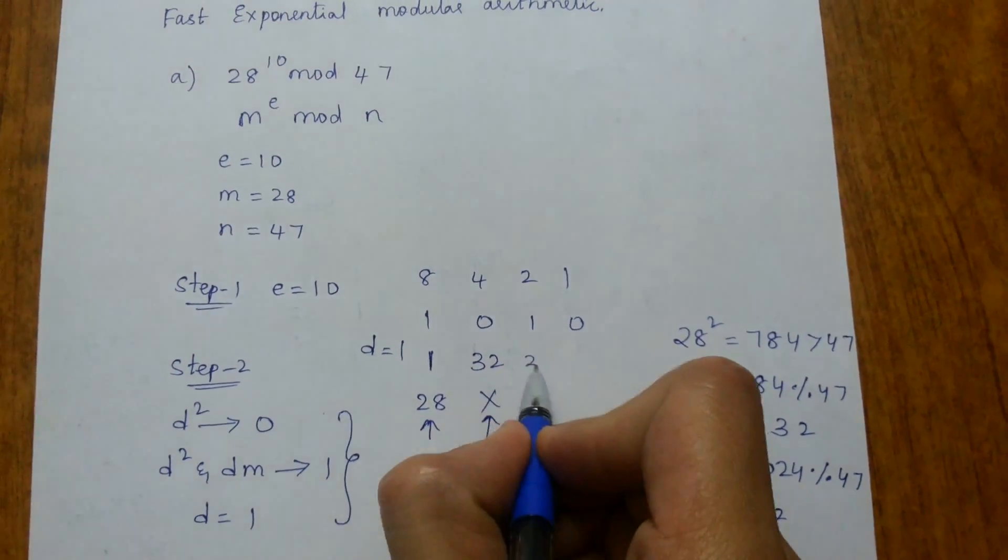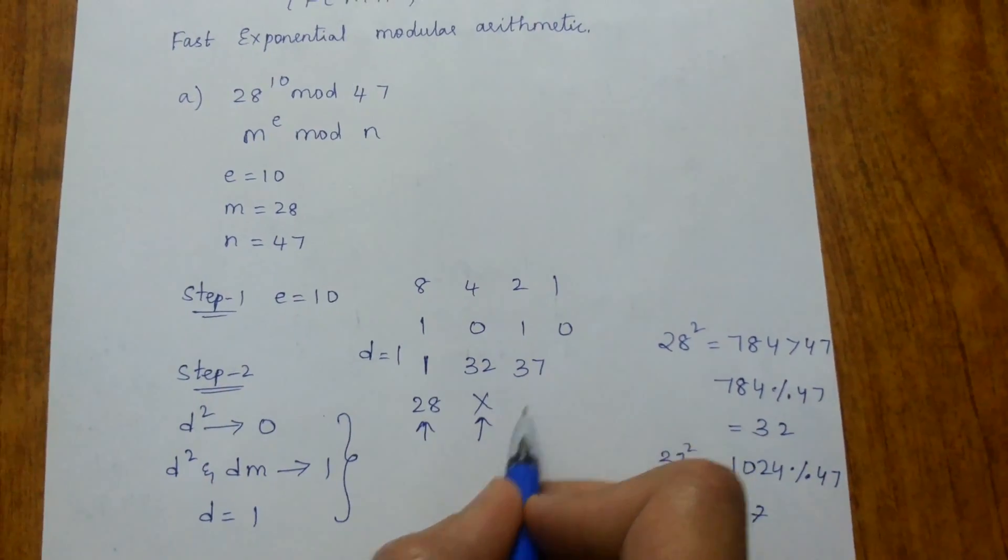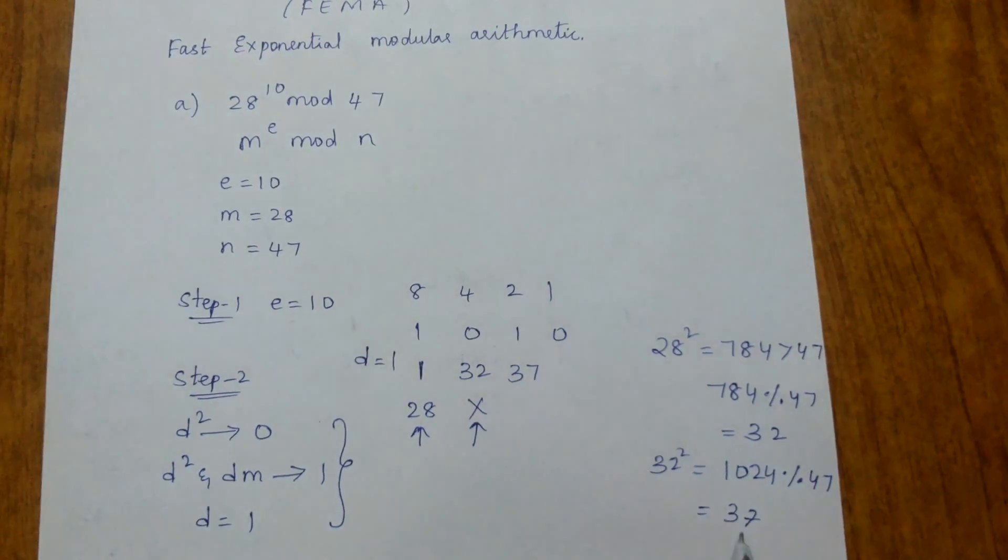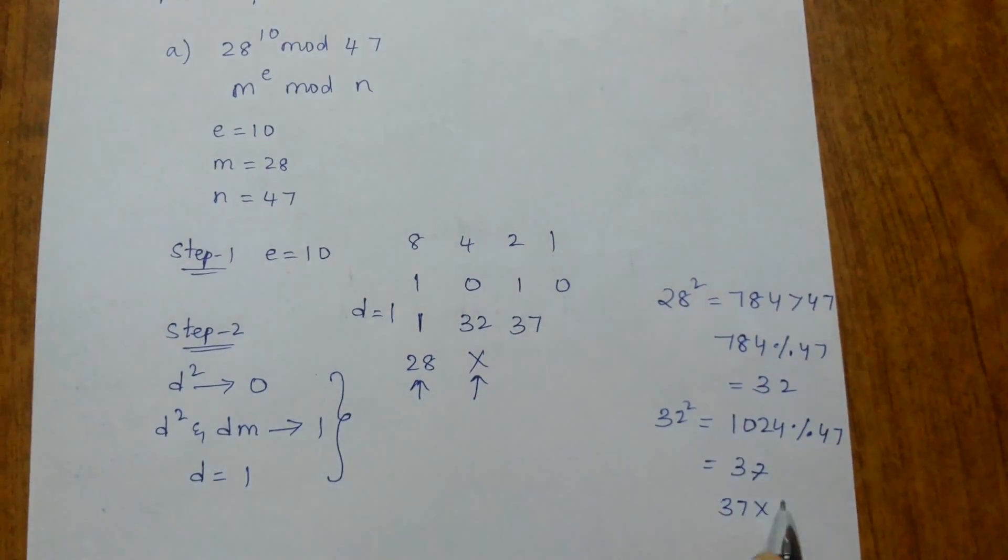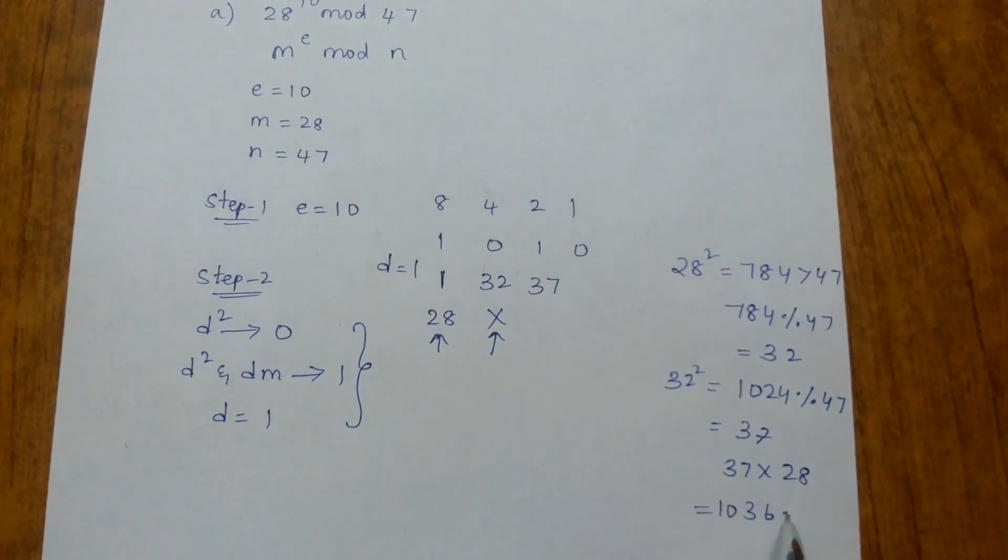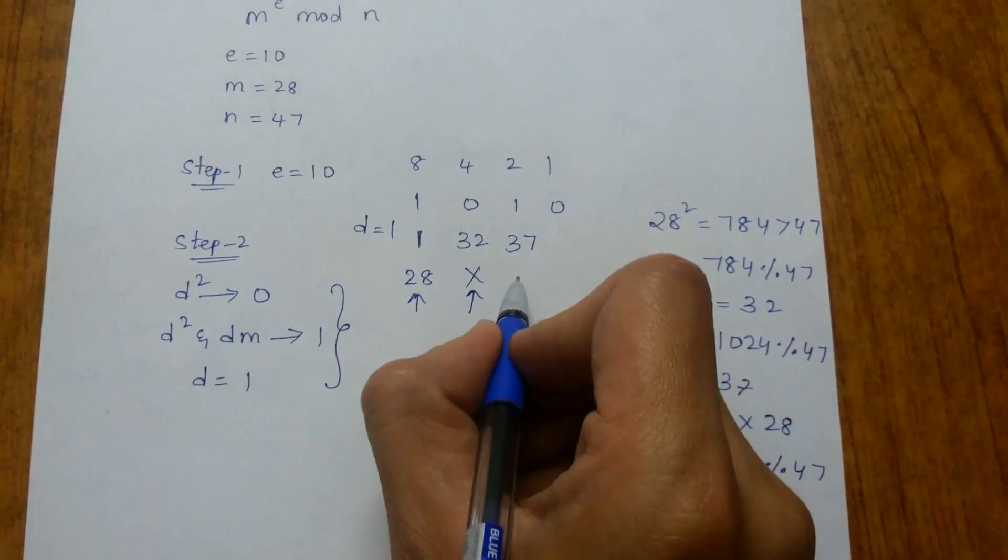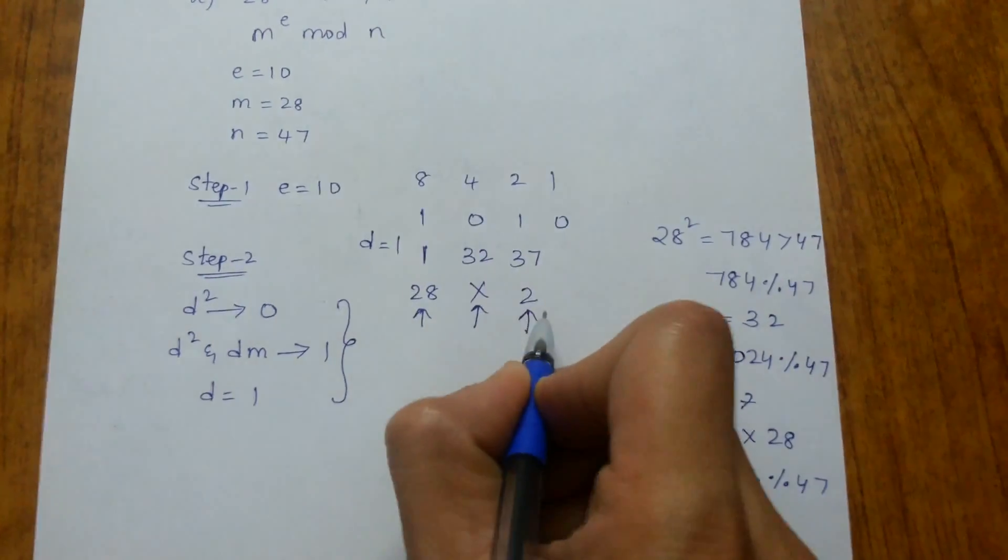We write the value of 37 here and perform 37×m. Since dm operation is there, 37×28 gives us 1036, which is far greater than 47. We calculate this modulus and get 2, so the present value of d is 2.